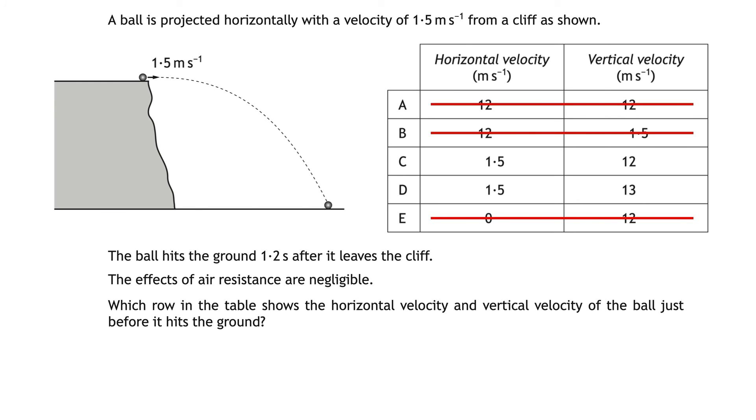If you don't know much about projectile motion then make sure to watch my video about it and the video of example questions that goes with it. Back to our question. To calculate the vertical velocity of the ball after 1.2 seconds we use the equation a equals v minus u over t. a is the acceleration due to gravity on earth which is 9.8 ms to the minus 2. u is the ball's initial vertical velocity which is 0 meters per second since it's projected horizontally and t is the time of 1.2 seconds. v is what we're trying to calculate the vertical velocity of the ball just before it hits the ground. Let's substitute those values into the equation. The top line on the right hand side v minus 0 can be simplified to v and then to make this the subject of the equation we just need to multiply both sides by 1.2 giving us 9.8 times 1.2 which is 11.76 meters per second. To two significant figures that's 12 meters per second giving us the answer of C.